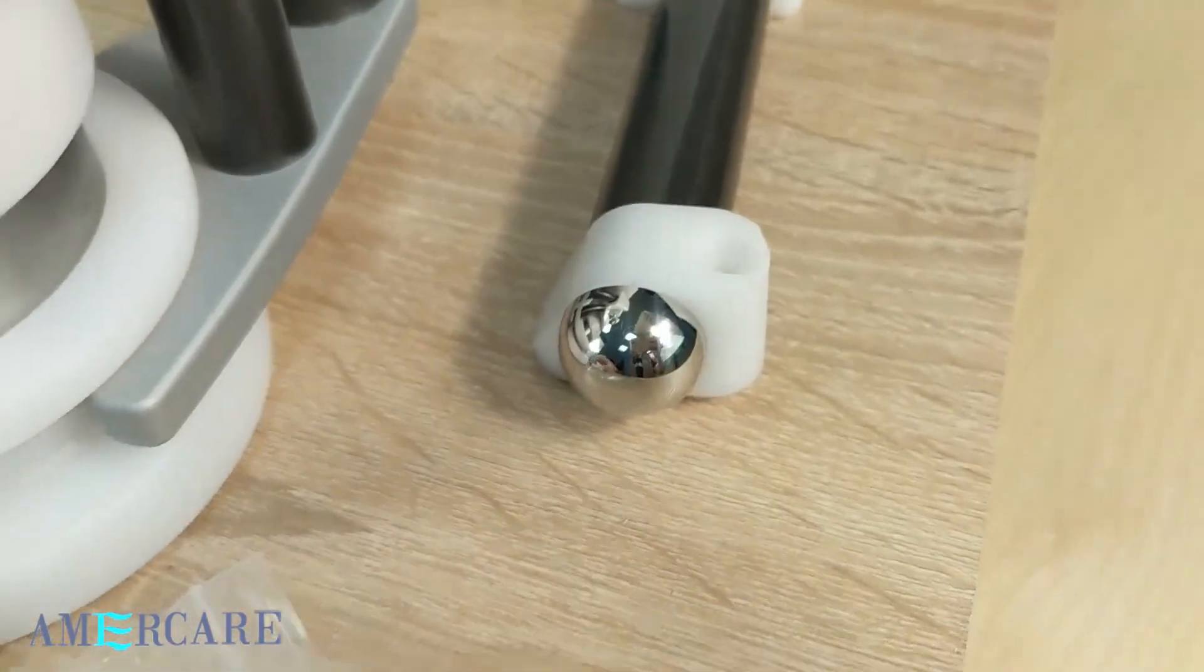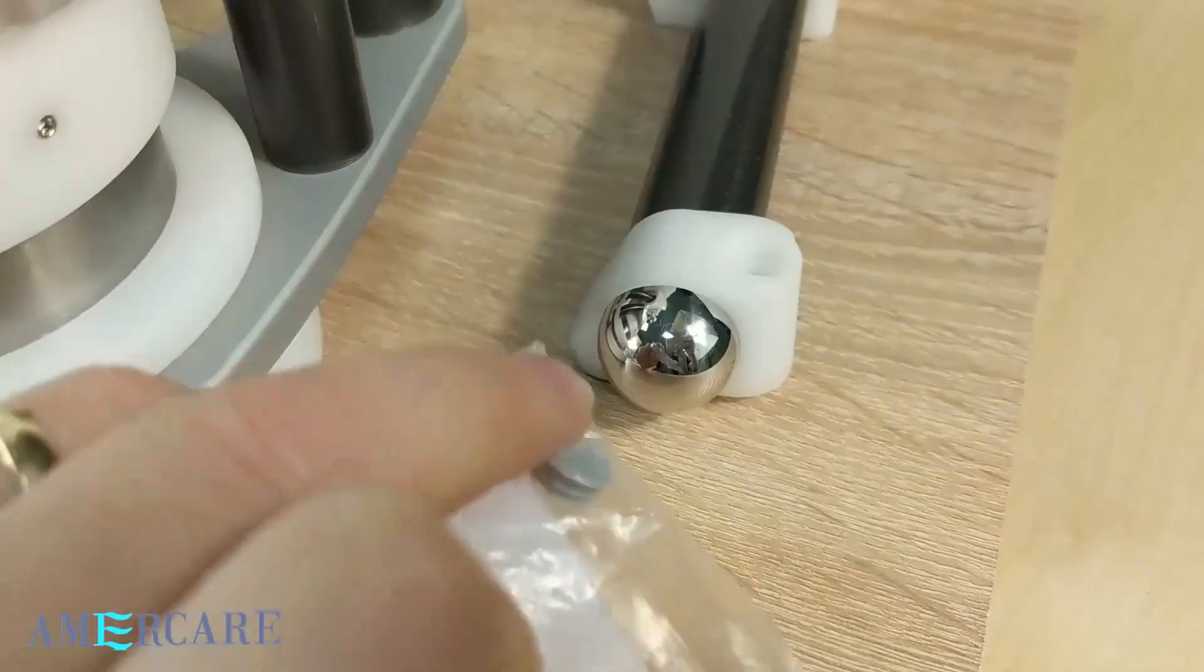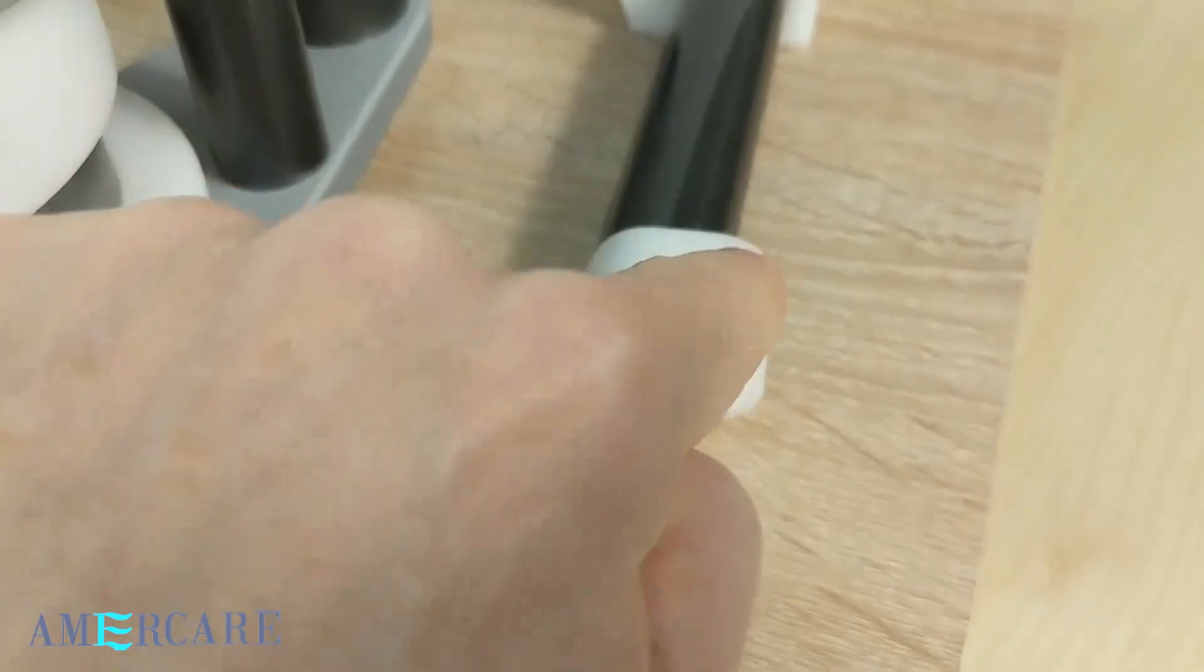With the unit we supply two cover caps. Once the unit is level, simply fit these into the two holes to remove any bug traps.